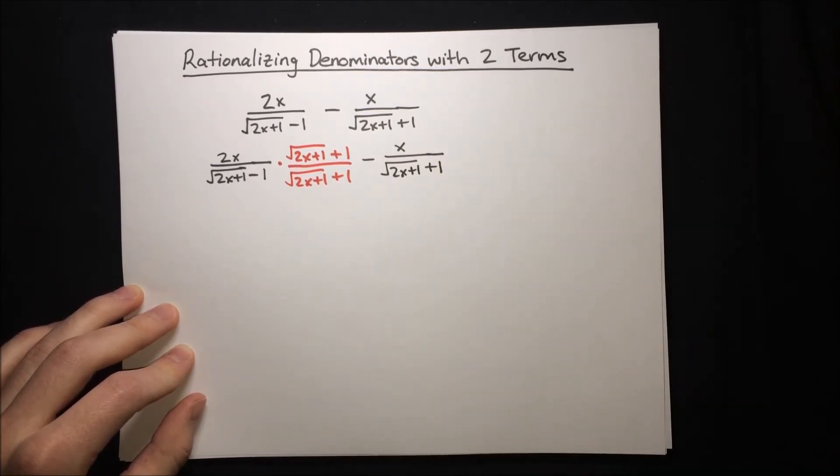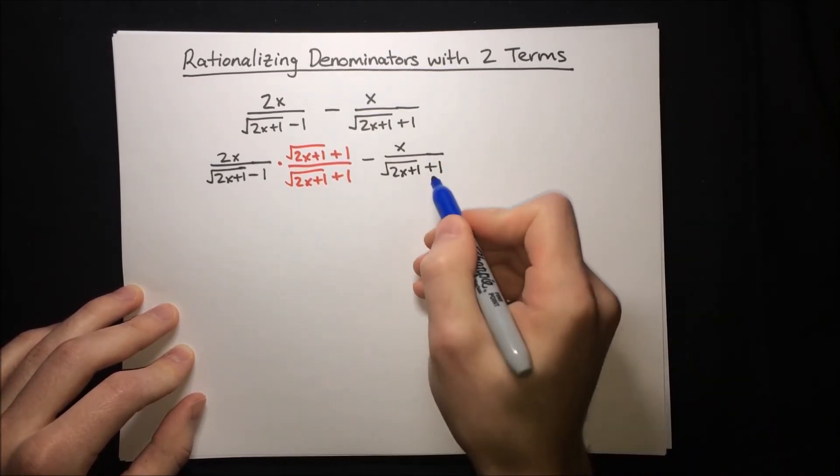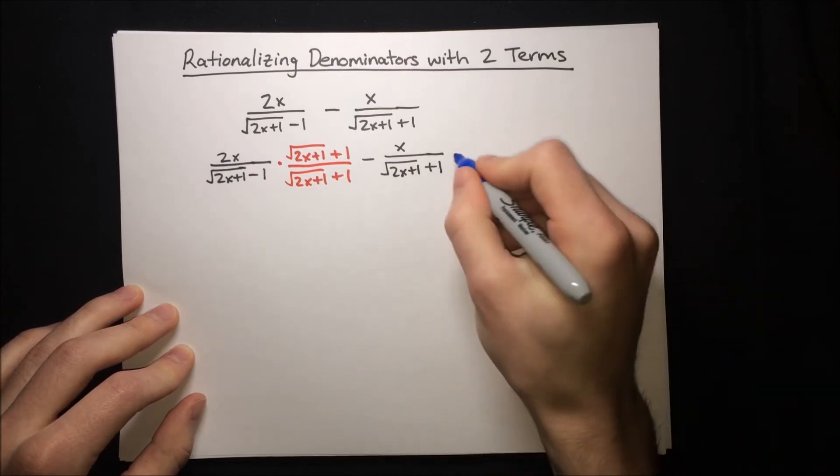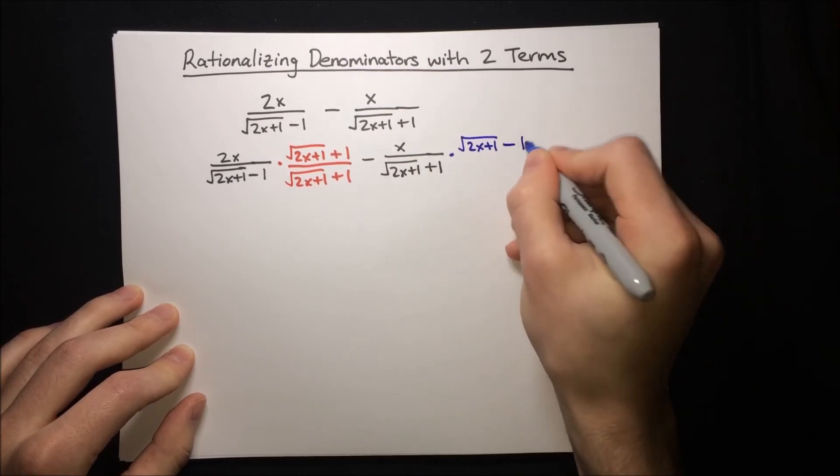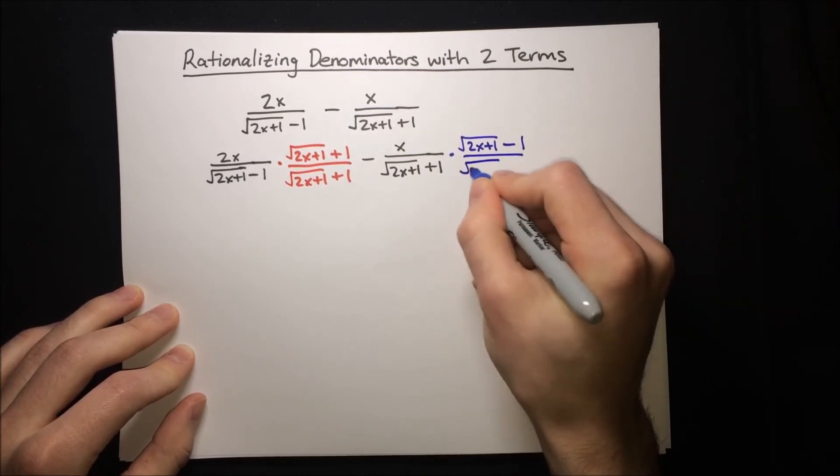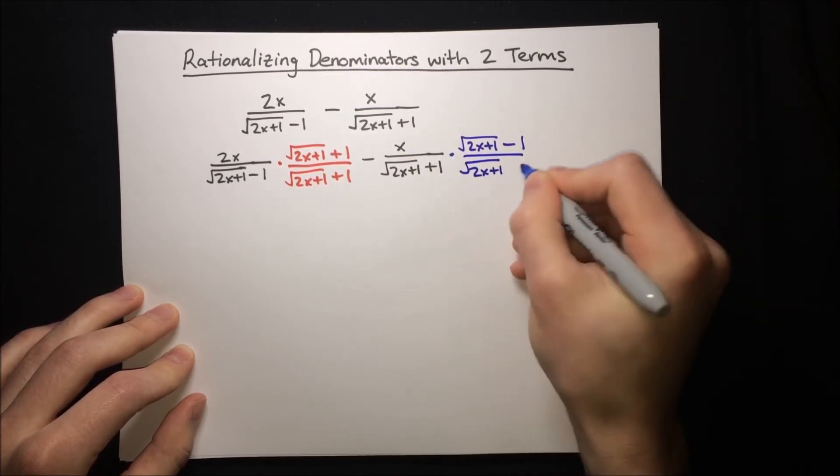Now this time, we have a plus here, so we're going to flip that into a minus, so times root 2x plus 1 minus 1 over root 2x plus 1 minus 1.